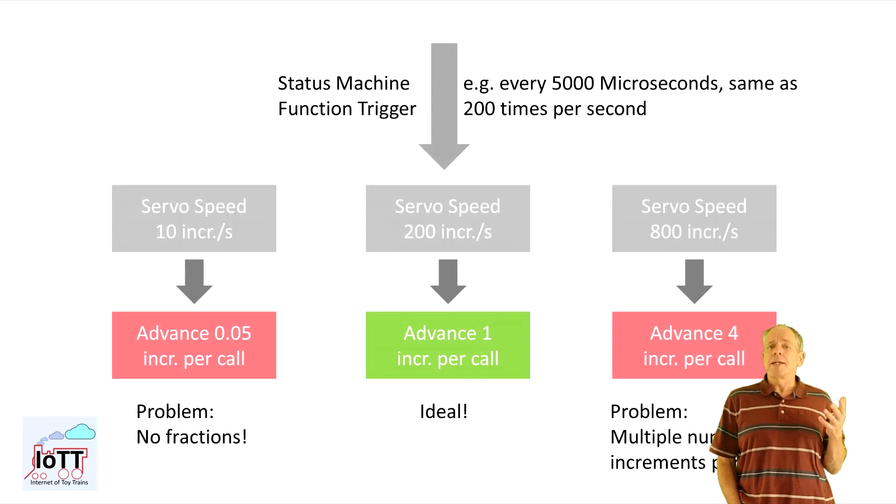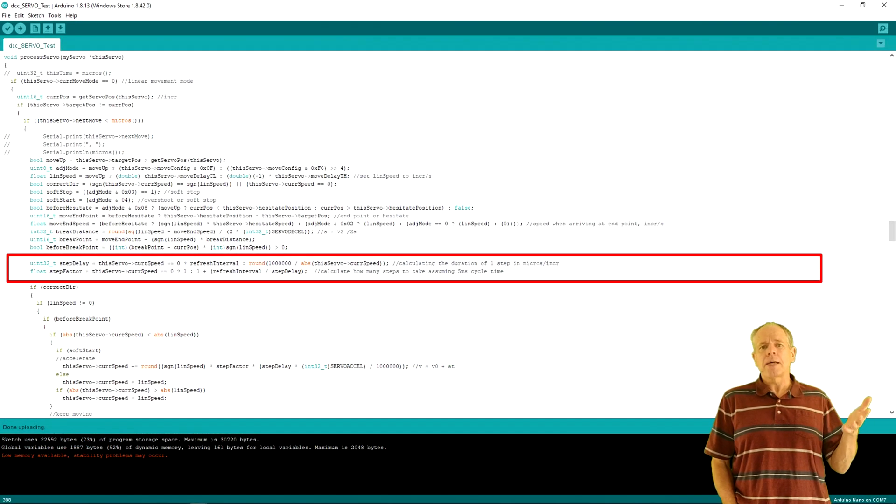On the other end of the range, we face a similar problem. If speed is higher than 200 increments per second, we should move more than one increment every cycle or alternatively shorten the cycle time. After some consideration, I decided to make both the cycle time and the number of increments variable in each step. So, every time the status machine is called, it looks at the current speed and then determines the ideal number of increments to move and the time to wait before calling the function again.